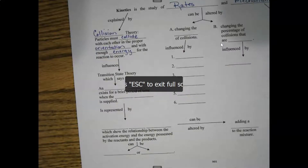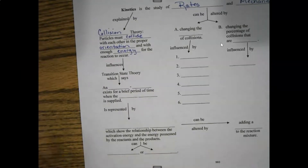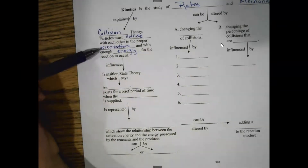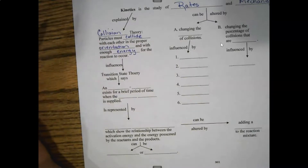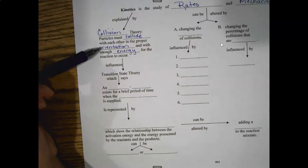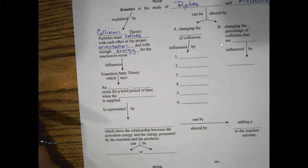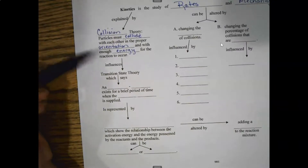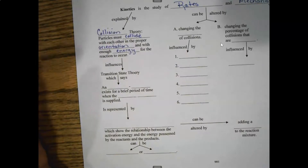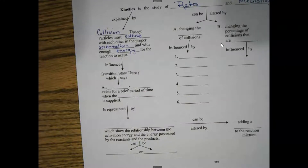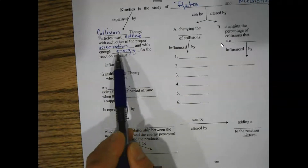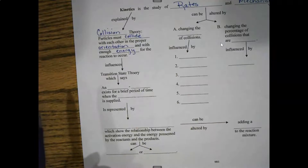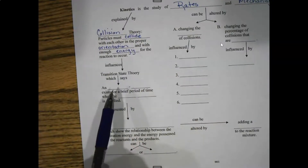That gives you a nice visual of the collision theory. Molecules have to collide — the right atoms need to collide with each other — and they have to collide with enough energy in order to have a successful interaction. The atoms need to overcome the repulsion of the electron cloud; the two electron clouds have to overlap so the electrons can interact. That's where the next idea comes in: the transition state theory.